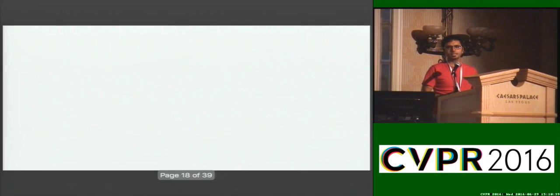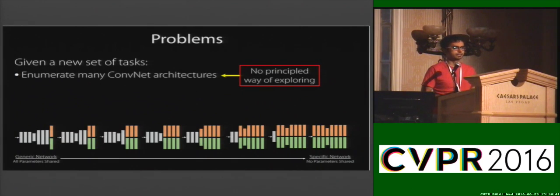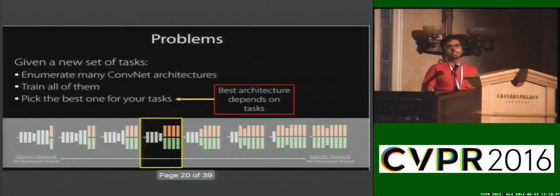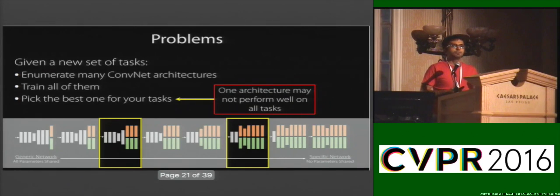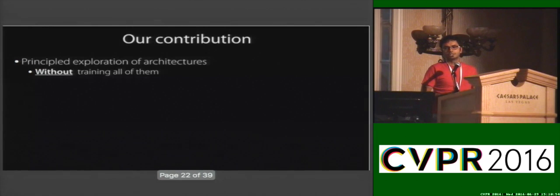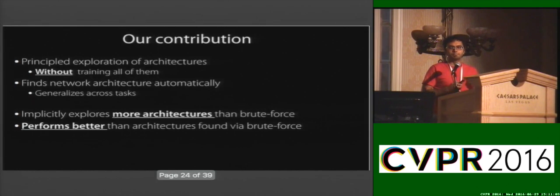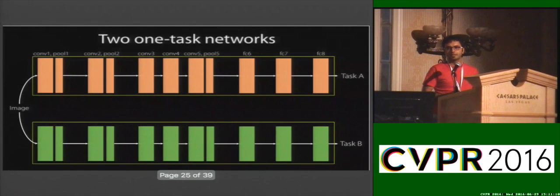So what are some problems with this standard approach? There is no principled way of exploring architectures. It's practically very expensive because you have to train and test all of them. It does not generalize across tasks, and one architecture may not improve across all tasks. So in this paper, we present a principled way to explore architectures without having to train all of them that can generalize across tasks. Because our method implicitly explores more architectures than mere splitting, it performs better than brute force search.